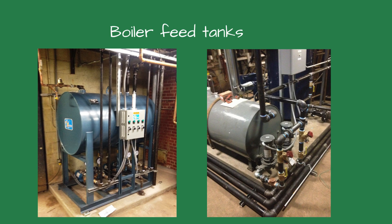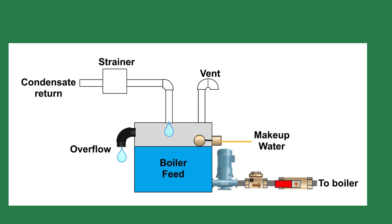The boiler feed tank is about five times larger than a condensate tank. Inside the tank is a float valve that feeds make-up water to the system. The float valve is set to maintain the water level at about one-third the tank height. The cold make-up water is then chemically treated and warmed by the returning condensate, so cold water is not injected into the hot boiler.